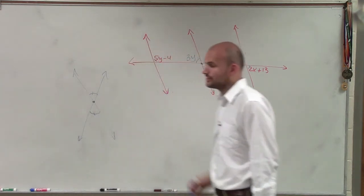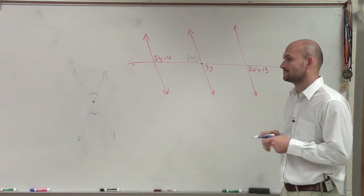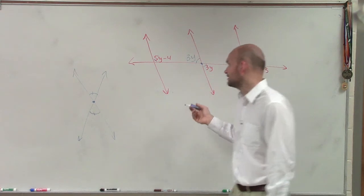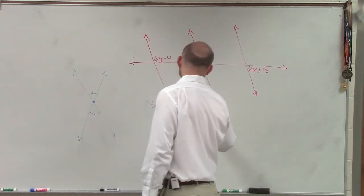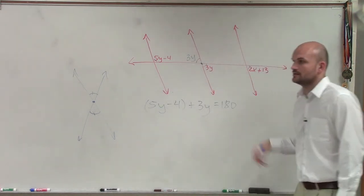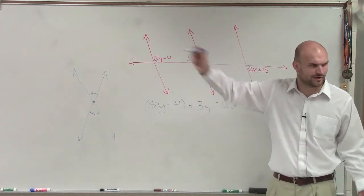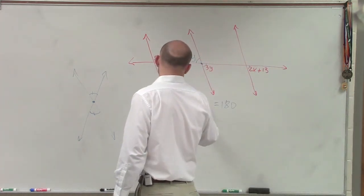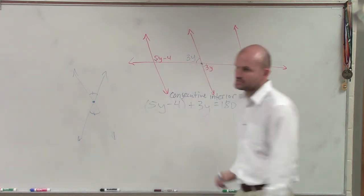They're called consecutive interior angles. And, Colin, what are consecutive interior angles? Would they add up to 180 or add up to each other? They add up to the 180. Very good. Consecutive interior angles add up to 180. So therefore, I can say 5y minus 4 plus 3y equals 180. I'm going to show you a diagram next, and then they'll hopefully clear it up for you. So therefore, these are consecutive interior. How do I get that equation? So you've got to make sure you write that in there.